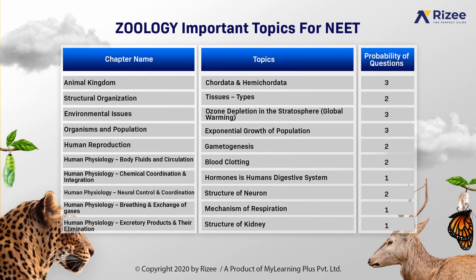Coming to the chapter of animal kingdom, important topics are phylum Chordata and phylum Hemichordata. Probability of questions to be asked are 3. Coming to the next chapter, structural organization in animals, we have types of tissues. Probability of questions asked are 2. In the environmental issues chapter, ozone depletion in the stratosphere and global warming. Probability of questions asked are 3.